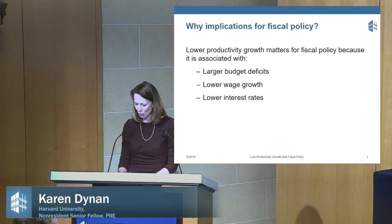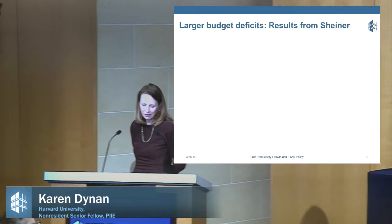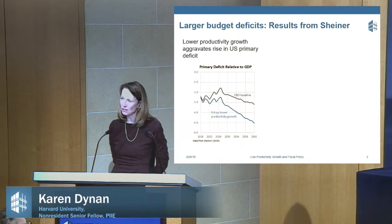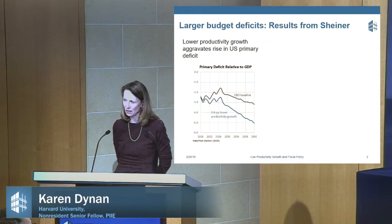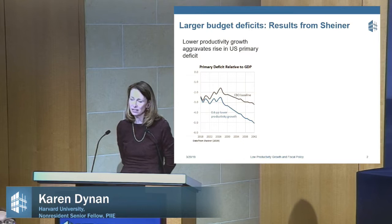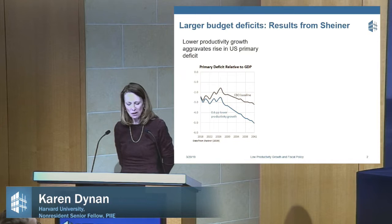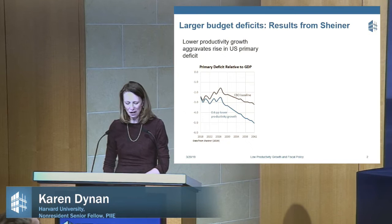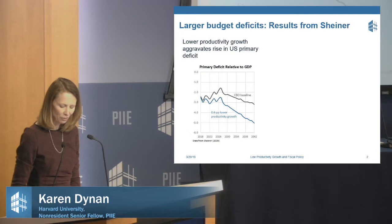Let me start with budget deficits. I'm going to show you a couple of charts from the Schaner chapter of the book. This chart shows you the primary deficit relative to GDP. The dark line is the CBO baseline forecast — you can see it gets a little more negative over the next 35 years. But the blue line shows what happens if productivity growth is six-tenths of a percentage point lower per year, and it makes the situation measurably worse, with a much larger increase in the budget deficit.